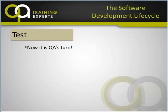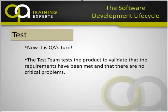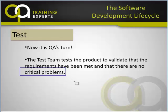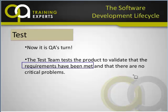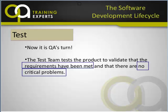Let's talk a little bit more about this test phase. So now it's QA's turn. The test team tests the product to validate that the requirements have been met and that there are no critical problems. A critical problem is a defect. So here are two goals: making sure that the requirements have been met, and making sure that there are no critical problems. Those are the QA team's goals, and this is going to be your job during testing.